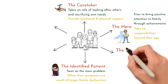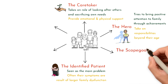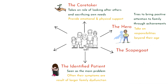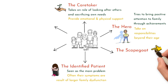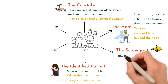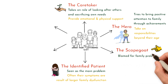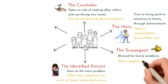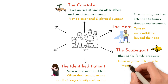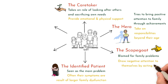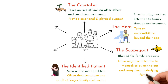4. The scapegoat, or black sheep. This family member is blamed for the family's problems. They often act out or rebel, drawing negative attention to themselves as a way to divert attention from the family's underlying issues.